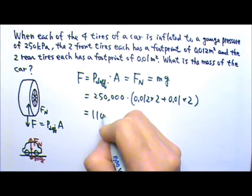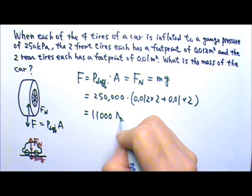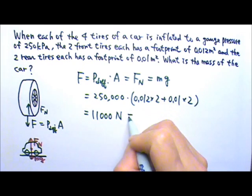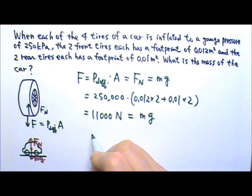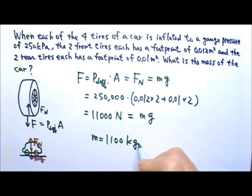you'll get 11,000 newtons. And this equals to the mg of the car. That means the mass of the car must be 1,100 kilograms.